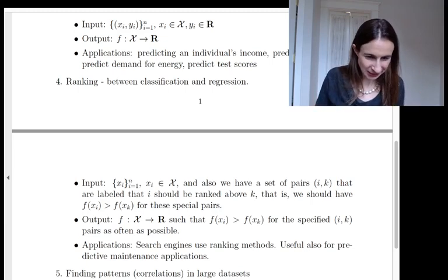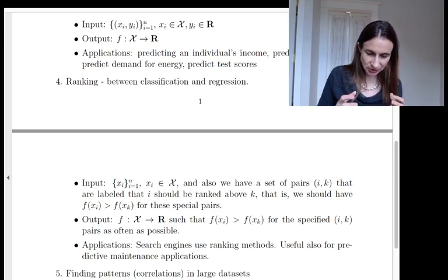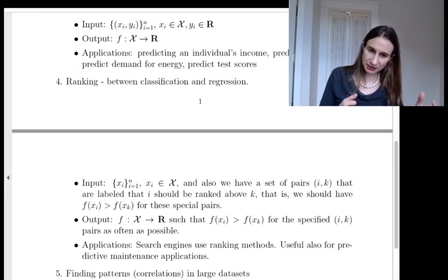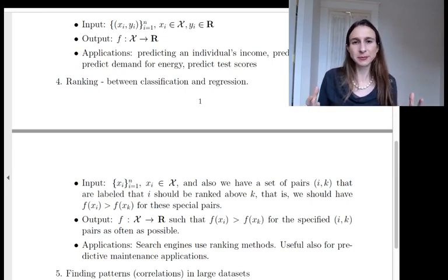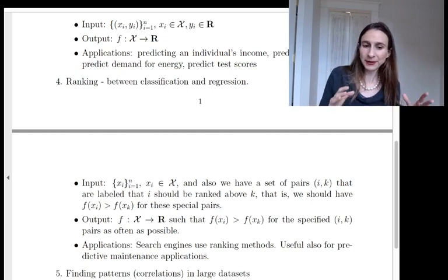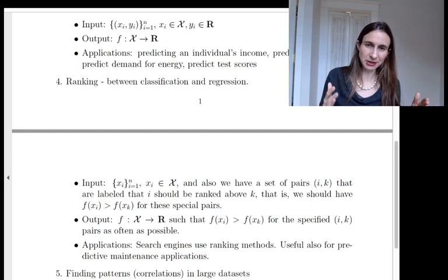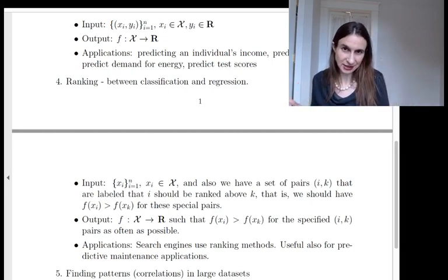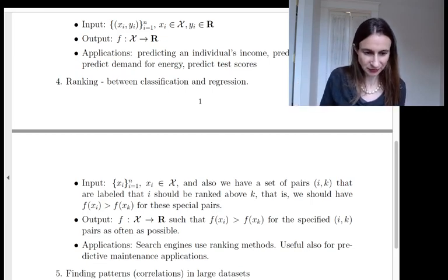Okay, so that's a ranking problem here. So you have, as your labels, you have all these special pairs that i should be ranked above k. So in other words, you want to construct this model f of x, so that f of x_i should be larger than f of x_k for most of these special pairs in your training set. And you're hoping that if you construct this model properly, not only will work on the training set, but it'll also work on the test set. So these are movies that you haven't seen before, again, just expressed as feature vectors.